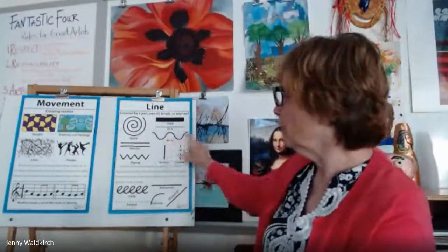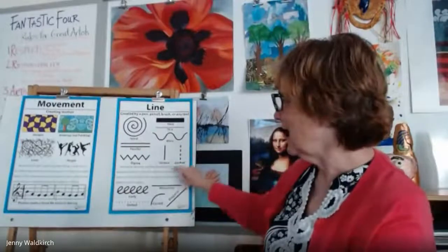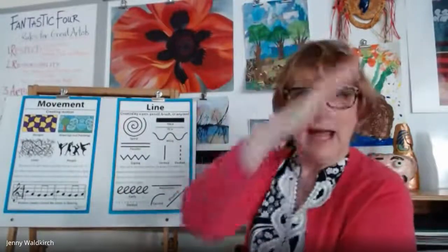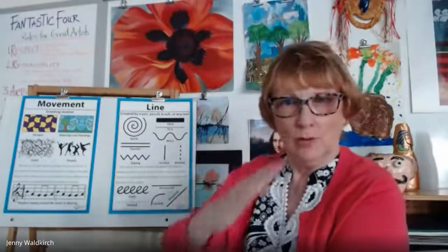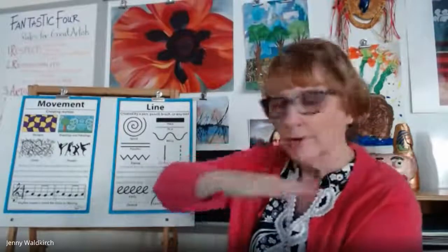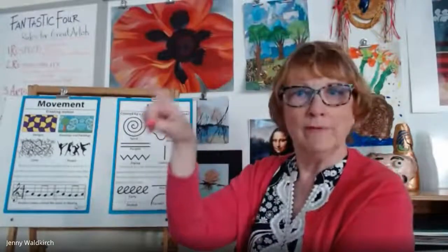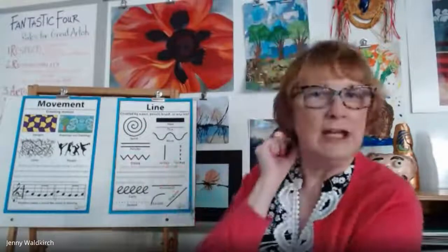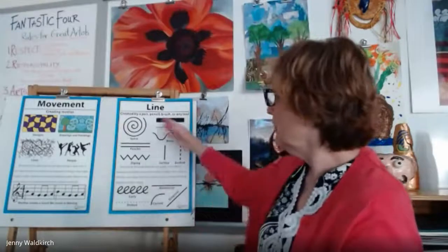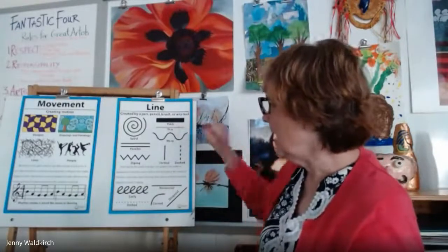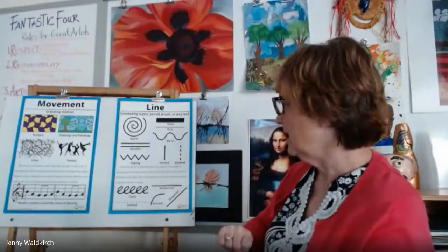There are spirals, they're parallel, they're zigzag, they're vertical — up and down — diagonal, horizontal, curly. Some of you have curly hair and each strand of your hair is considered a line of hair. They're wavy. Lines can be thick and lines can be thin.